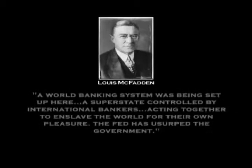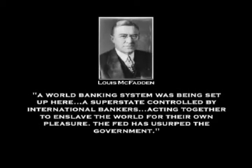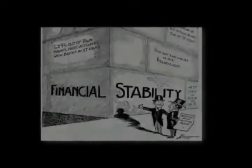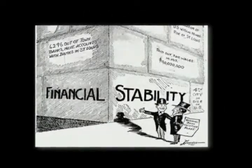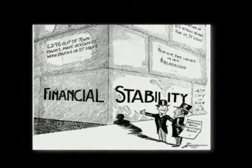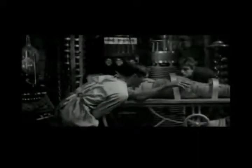Congressman Lewis McFadden also expressed the truth after the passage of the bill: "A world banking system was being set up here — a super state controlled by international bankers, acting together to enslave the world for their own pleasure. The Fed has usurped the government." Now, the public was told that the Federal Reserve System was an economic stabilizer and that inflation and economic crises were a thing of the past. But as history has shown, nothing is further from the truth. The fact is, the international bankers now had a streamlined machine to expand their personal ambitions.